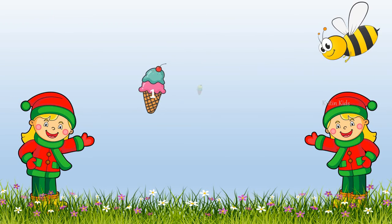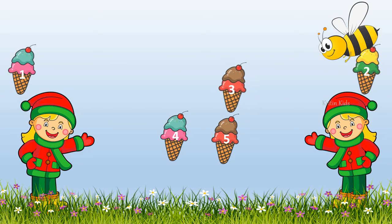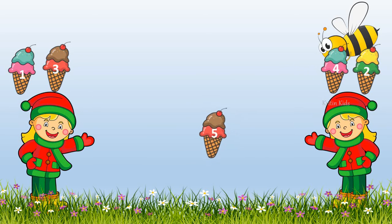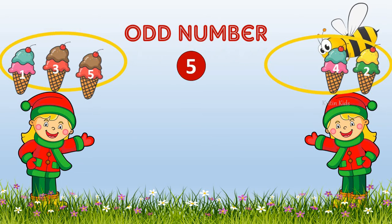Let's take one more example. Here I have five ice creams. Let's divide them between my friends. The first ice cream goes to the first friend, second to the second friend, third to the first friend, fourth to the second friend, fifth to the first friend. My first friend has three ice creams and the second friend has only two ice creams. So, both are not having equal number of ice cream. So, number five is an odd number.